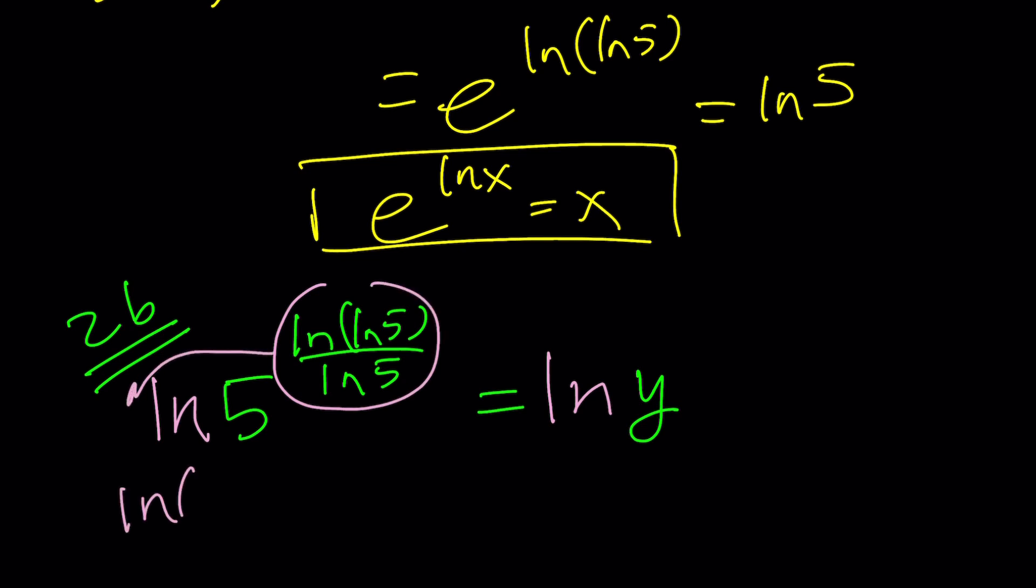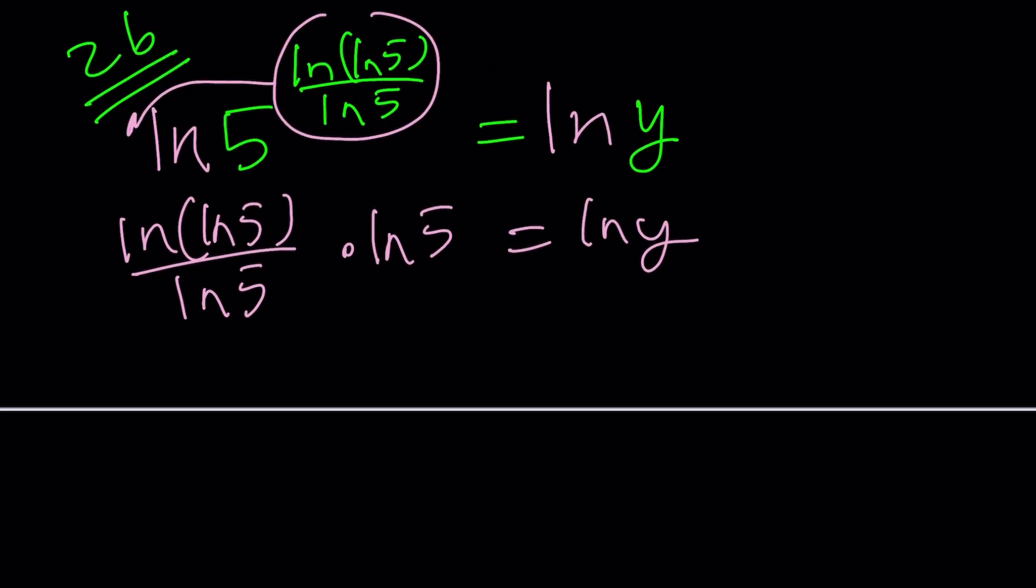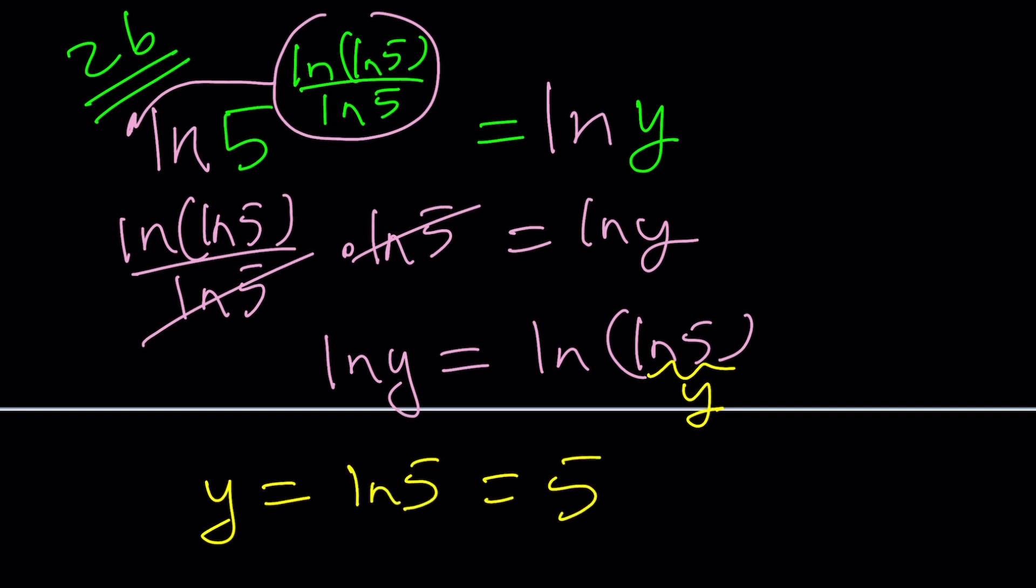ln(ln5) over ln5 times ln5 equals ln y. ln5 cancels that and we end up with ln y equals ln(ln5). Since ln is equal, either you can do e to the power of both sides or just think about it. This needs to be y. And you're like, why? Don't ask why, but y equals ln 5. And what is y? It is 5 to the power ln(ln5) over ln5. So, that's what we were trying to simplify and we got the answer. Make sense?